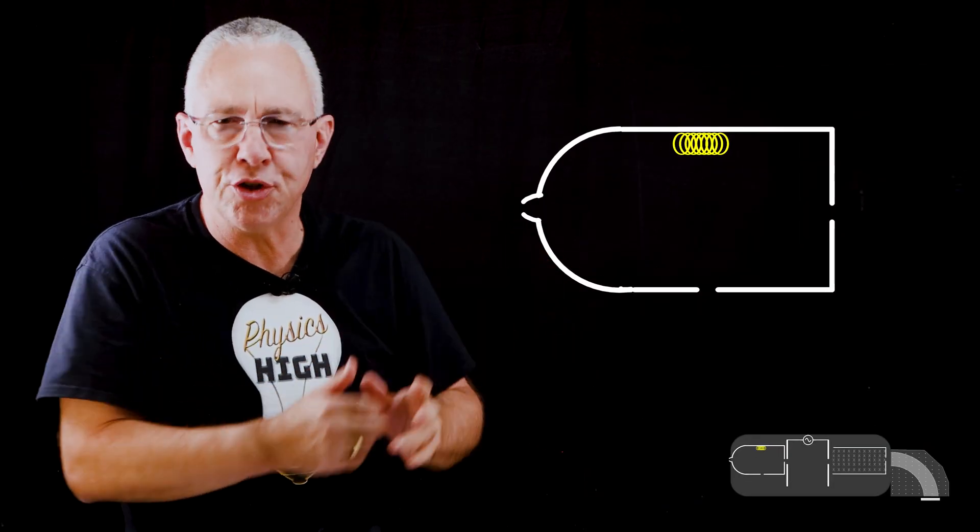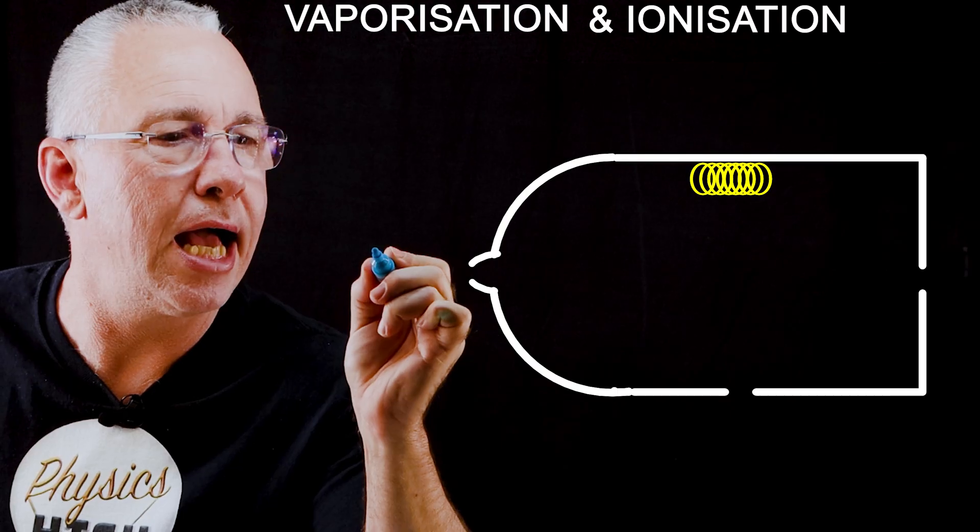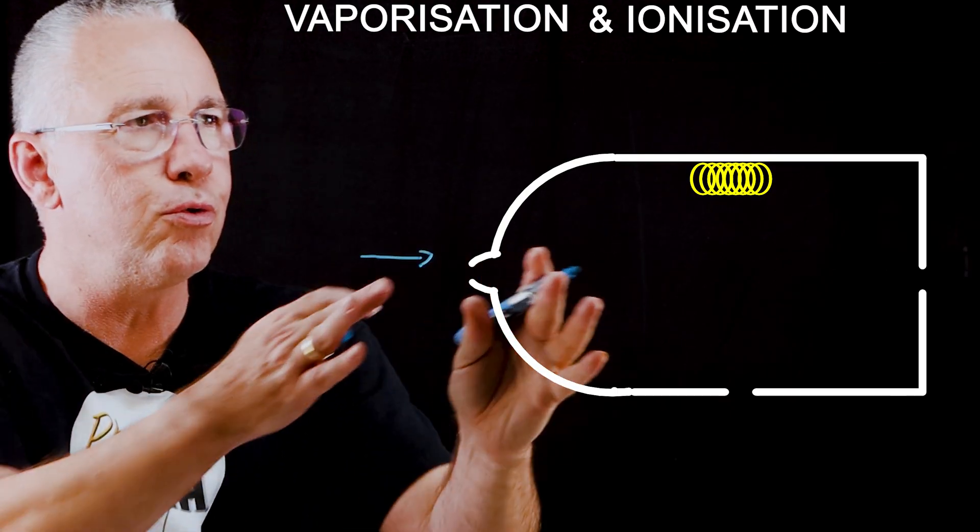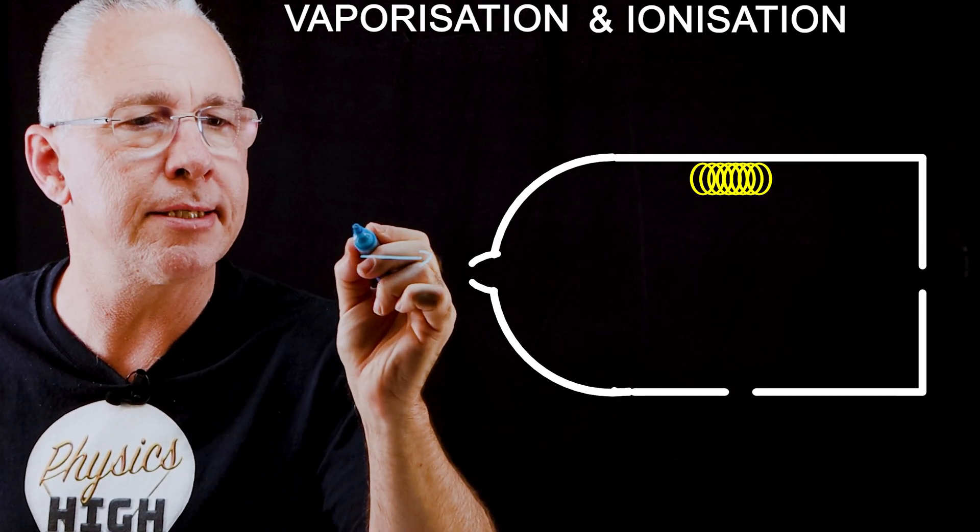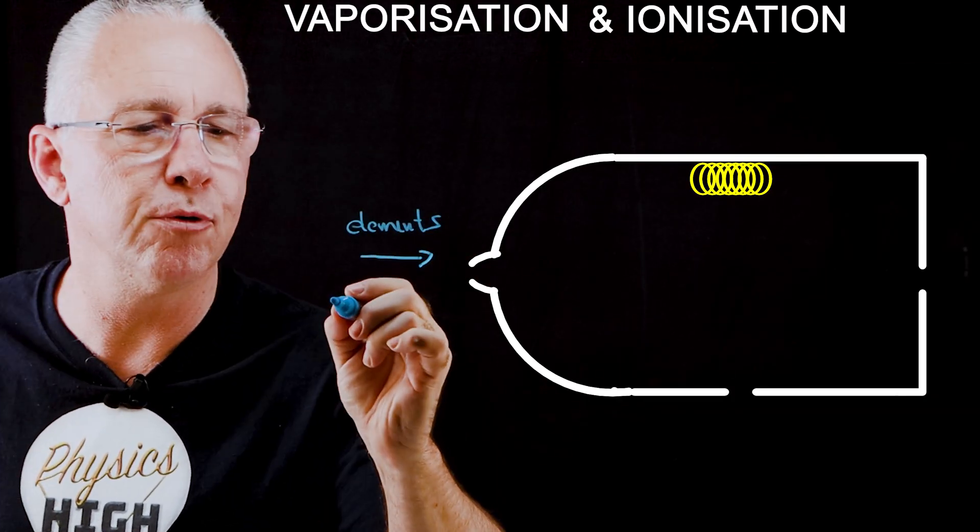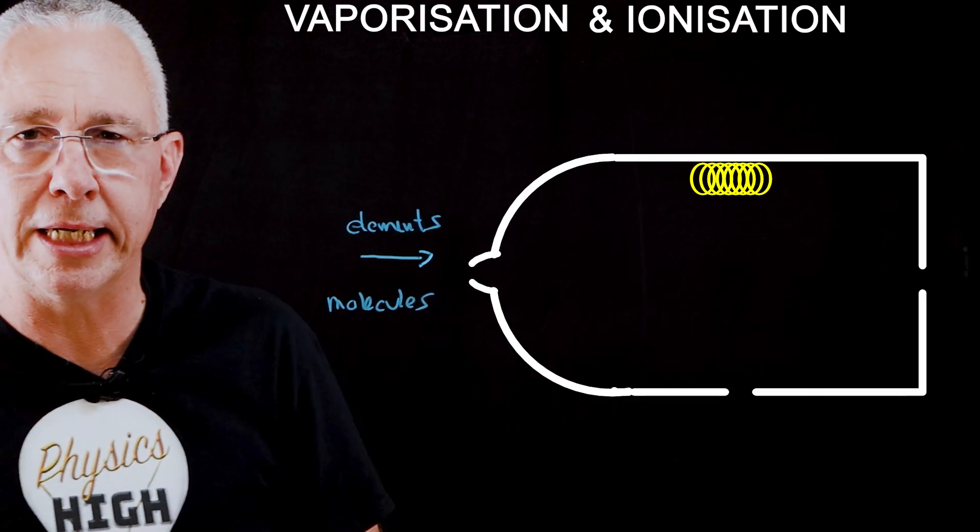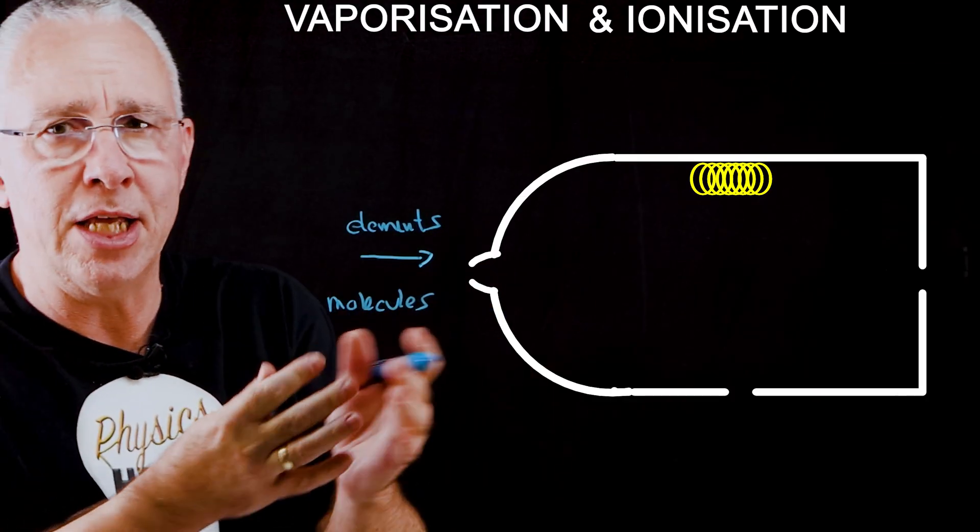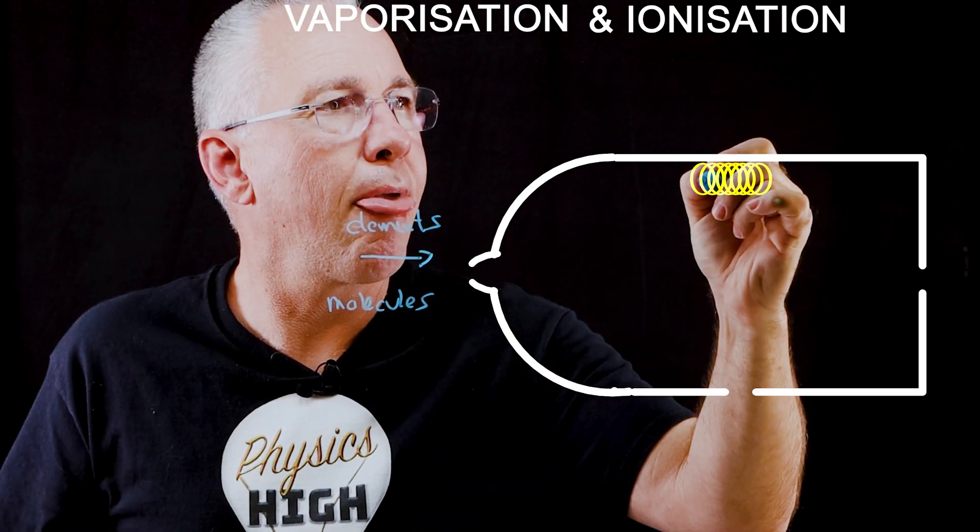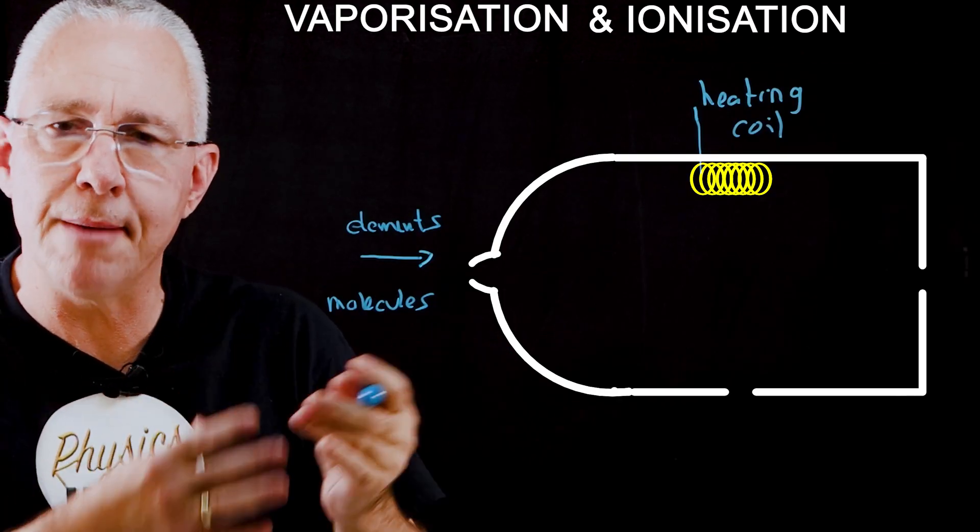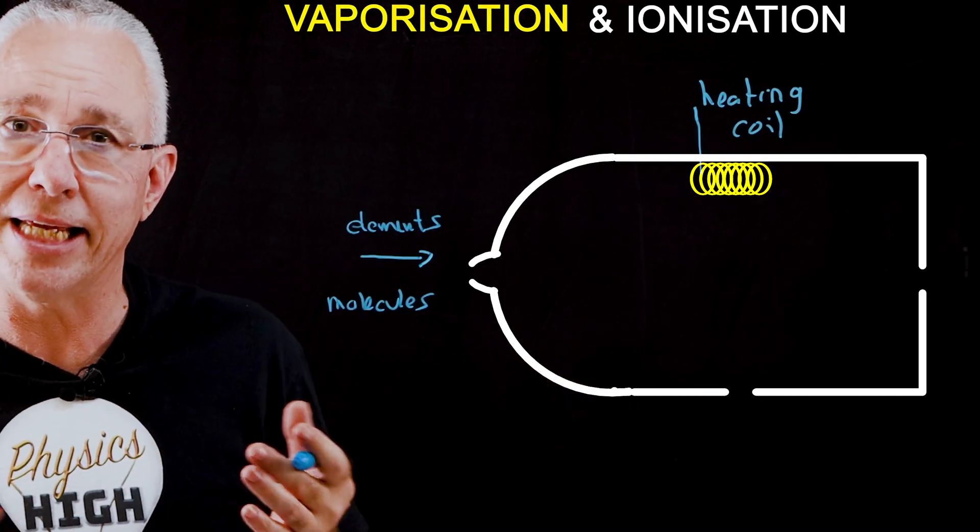So now let's look at each of these components and the scientific reasoning behind them. Let's start first with the chamber where we have vaporization and ionization. So we inject our sample into this chamber. Now this sample can be in the form of elements, but it could also be in the form of molecules. So for example, I might insert chlorine gas, or I might do larger molecules such as organic molecules. We now have a heating coil, which if the sample isn't in a gaseous state, will allow it to now be in a gaseous form.